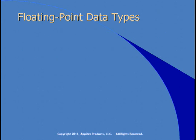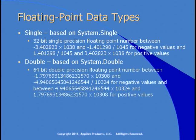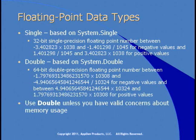Integer data types store whole numbers with no decimal point. If you need decimals, use floating point data types. The smaller is Single, based on System.Single — a 32-bit single precision floating point number. Even bigger is Double, based on System.Double, which is a 64-bit double precision floating point number holding even larger values. In general, you should use Double unless you have concerns about memory usage, as it takes twice as much space but is also more accurate, especially for complex calculations.